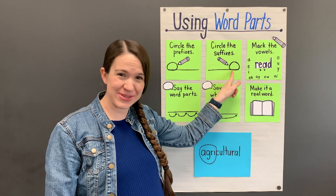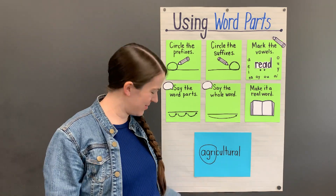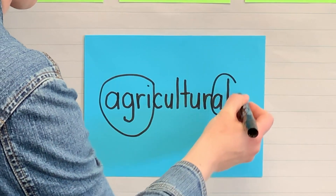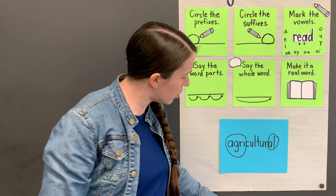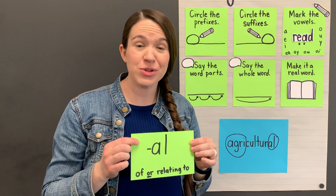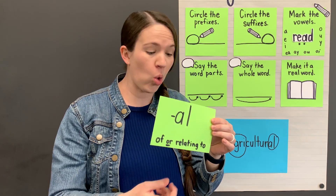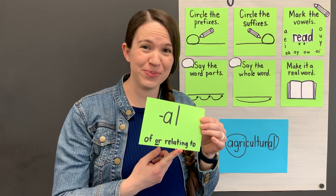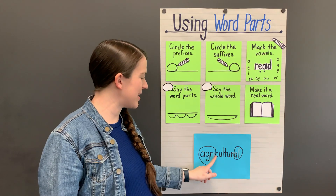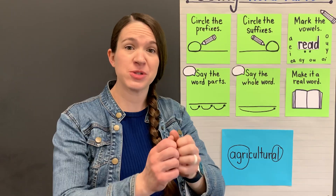Now let's circle the suffixes. A suffix is a word part added to the end of a word to change its meaning. Do you see a suffix? We see '-al.' '-Al' is often added to nouns to make adjectives that mean 'of or relating to.'